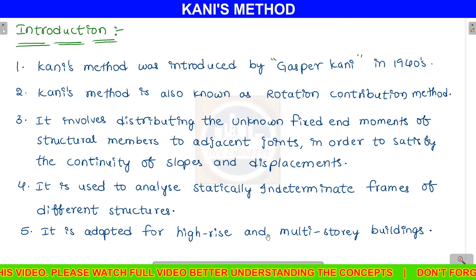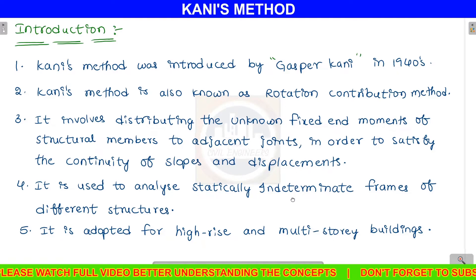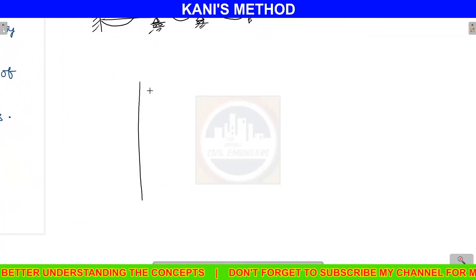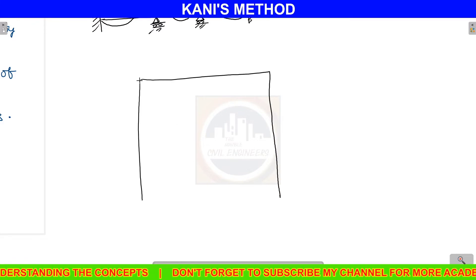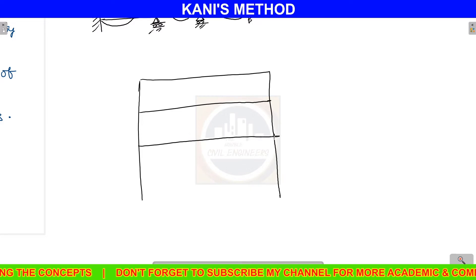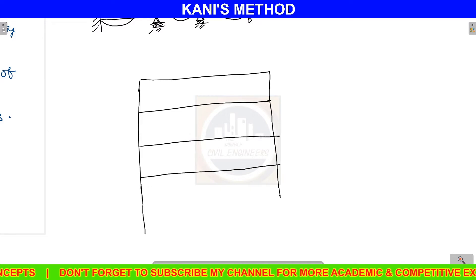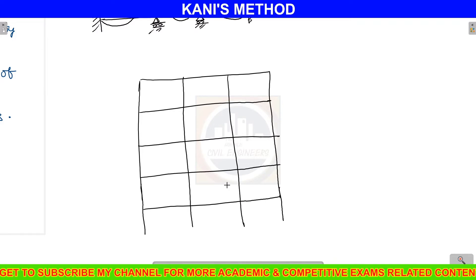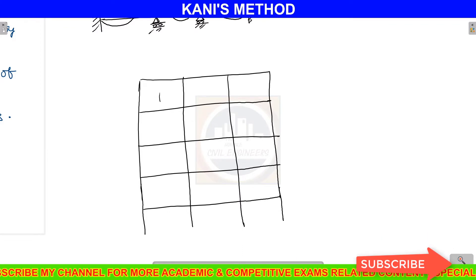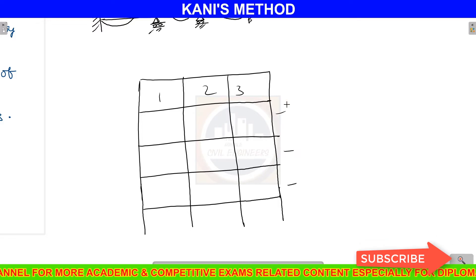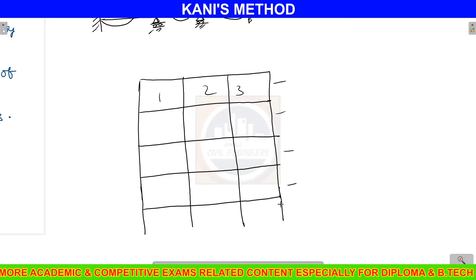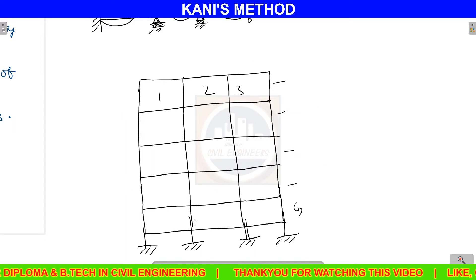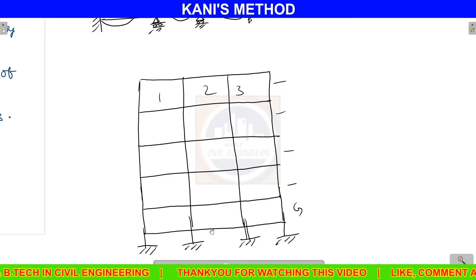Kani's method is adopted for high-rise multi-story buildings, where the number of stories is greater. These buildings include a ground floor, first floor, second floor, third floor, and fourth floor. To analyze this type of multi-story frame, Kani's method is the best suitable and easy approach.